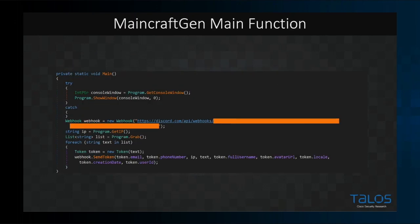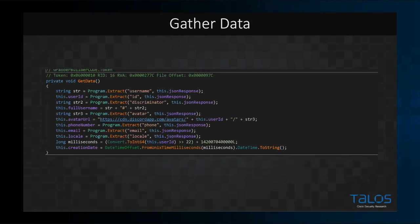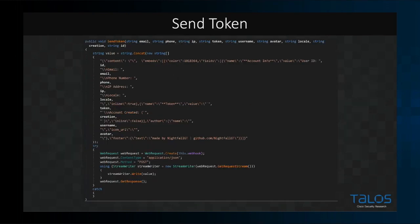Here's a real-world example of a webhook being abused. This is a screenshot from the main function of the MinecraftGen executable I mentioned earlier. You can see where the orange bar marks the webhook the stealer is sending the stolen token to. Not only does this malware steal the access token, it also steals the username, avatar, phone number, email, location, and logs the user's IP address. Here's the actual function that sends the data back to the attacker — it's just a JSON format sent in an HTTP POST to a webhook. Once the attacker has this information, they can start performing actions on behalf of that user.